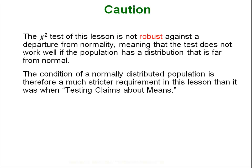As I've mentioned before I just want to caution you here again that the chi-square test is not robust at all against departures from normality, meaning that if your population is not normal this will really fall apart. So you always got to run those normal quantile plots and make sure you have a normal population.